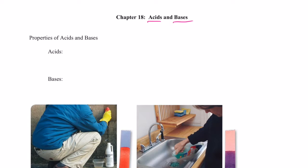So for acids, one property is acids react with many metals. You've seen this before in other demonstrations. If I take hydrochloric acid and react with magnesium metal, we produce hydrogen gas. The same thing happens with zinc and hydrochloric acid. If I take silver metal, I can react it with nitric acid — we produce a poisonous brown gas. So acids react with many metals.